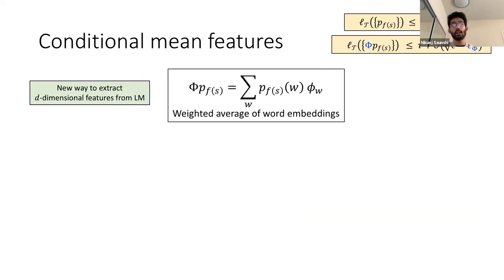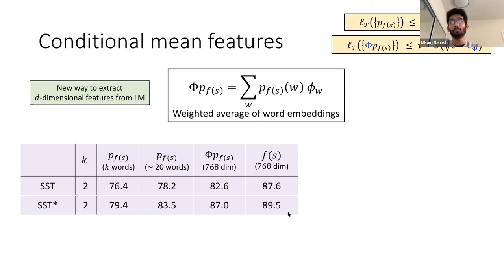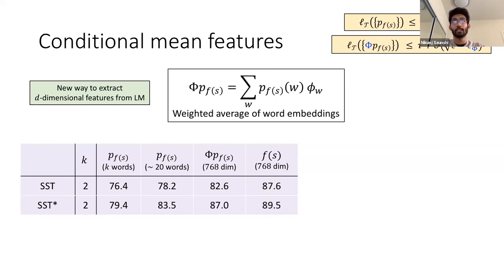The differences compared to the previous result: we're now showing guarantees for D-dimensional features instead of V-dimensional features, and we're suffering suboptimality with respect to the best softmax model rather than the true distribution. But we show guarantees for a restricted set of tasks — those natural only with respect to Φ. If you have a better idea of what Φ captures tasks of interest, you can perhaps just use that Φ in your language modeling and get these guarantees. Conditional mean features naturally show up in the theory — it's a weighted average of word embeddings, where the weight for a word is determined by the probability the language model assigns to it.